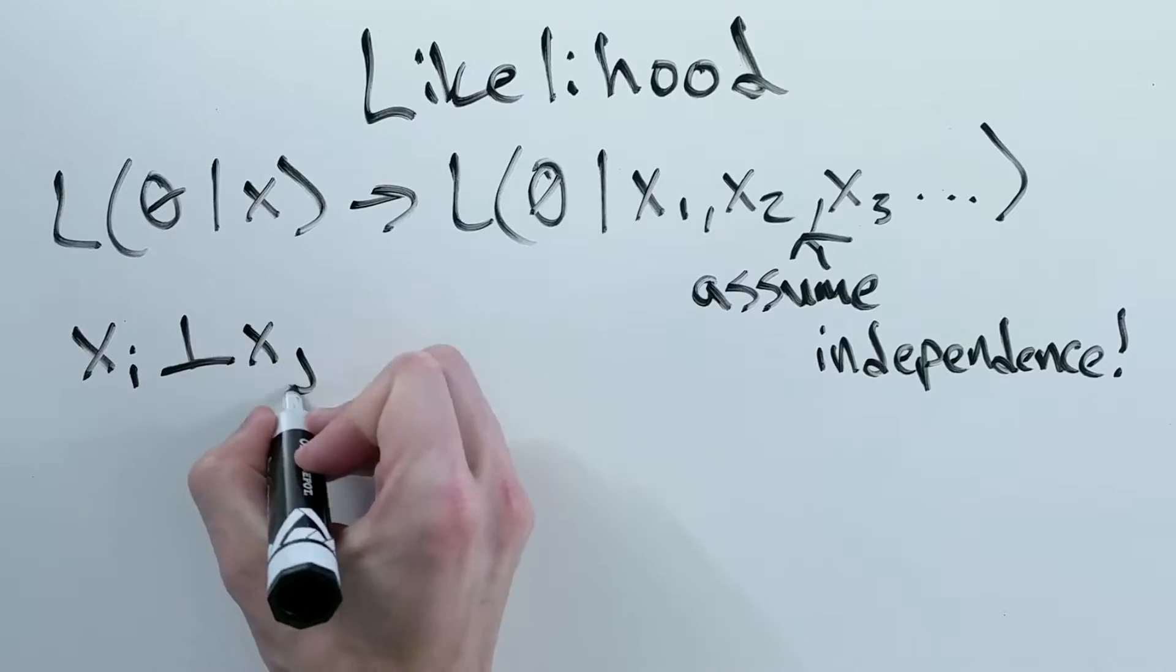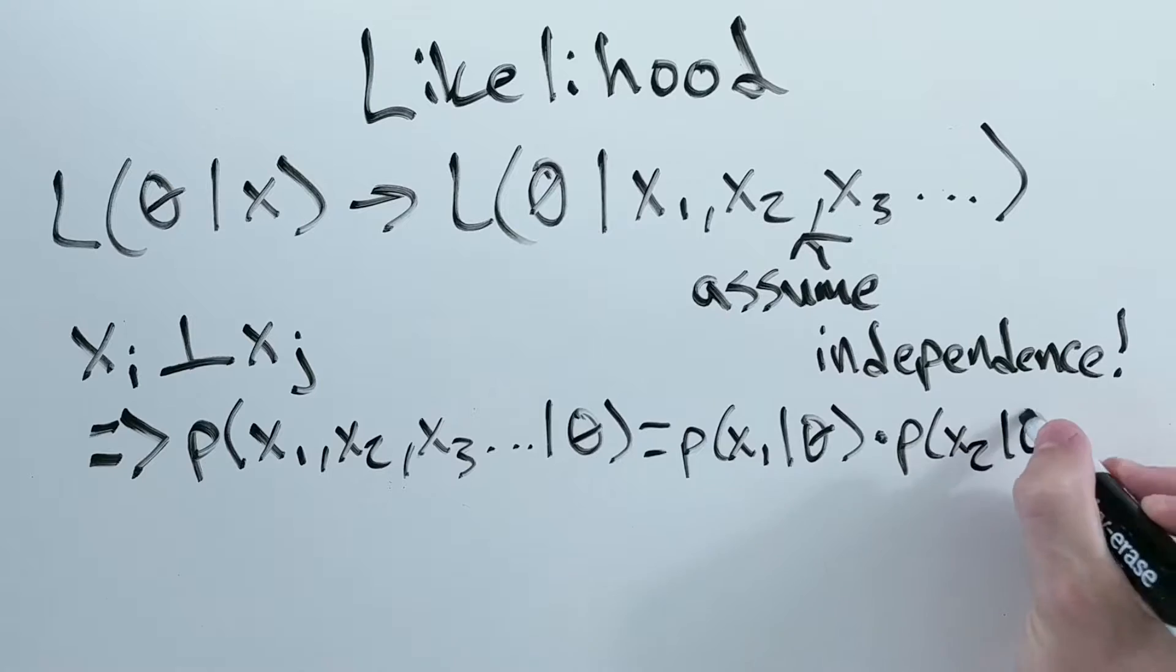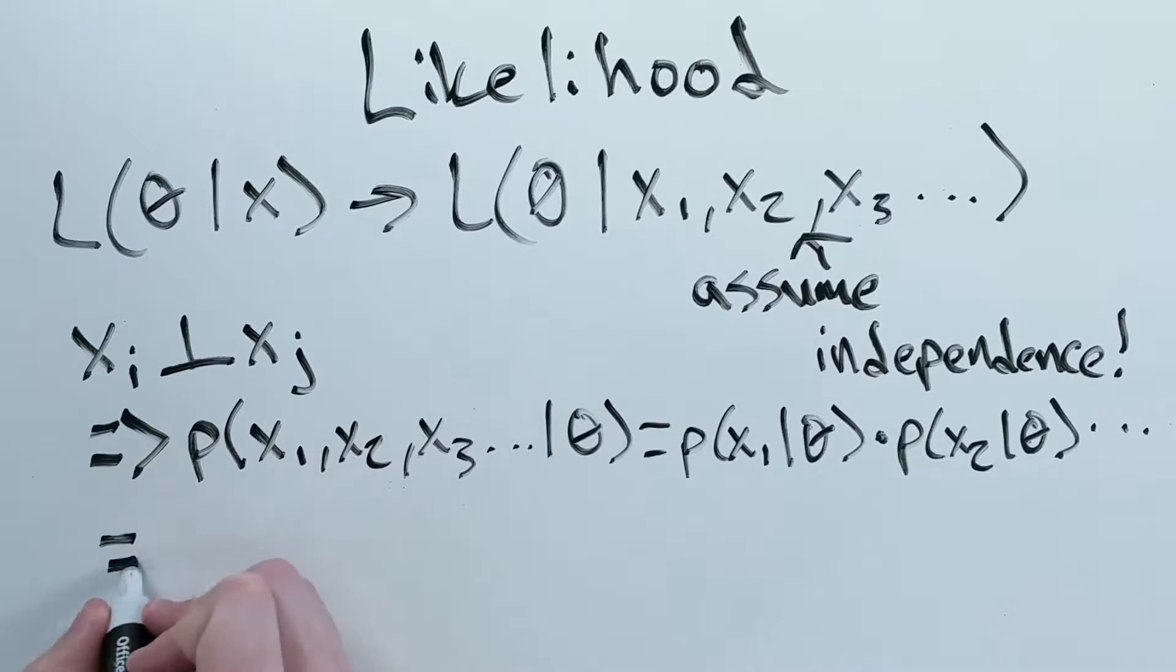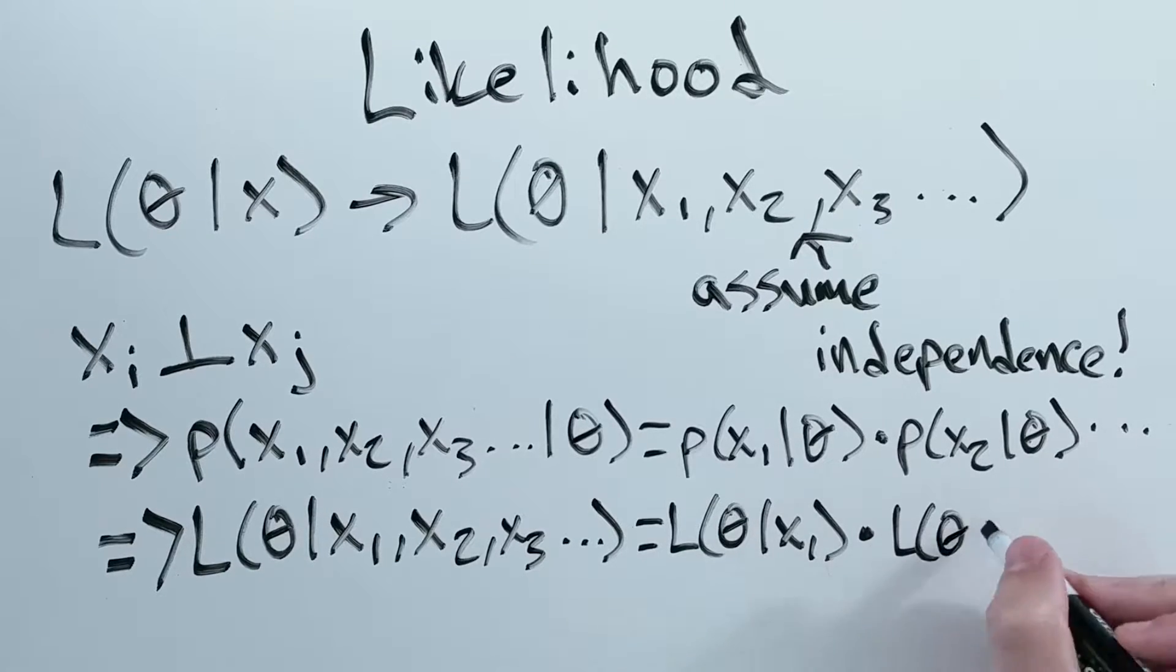Since each data point is independent, that means the probability of every point is equal to the product of the probabilities at each point. Similarly, the likelihood of all points is equal to the product of the likelihood at every point.